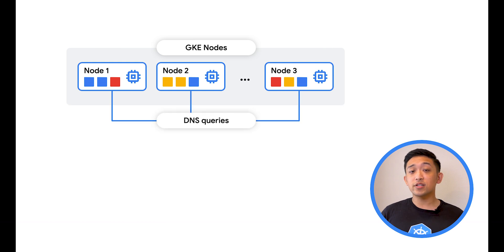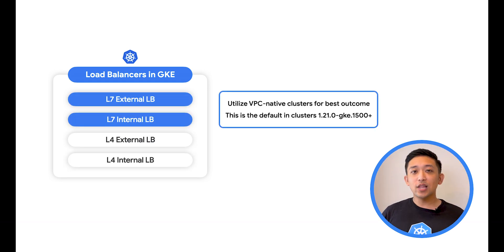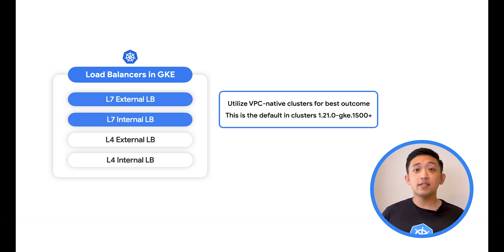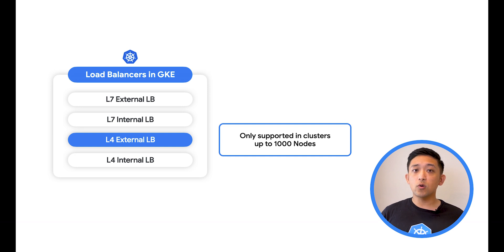GKE also supports a fully managed cluster DNS infrastructure with Cloud DNS for GKE. This removes DNS resolution from the cluster's infrastructure and utilizes a fully managed platform, Cloud DNS, instead. Finally, you'll want to plan for what workloads will need from a load balancing perspective to expose their workloads to clients. For Layer 7 load balancers, both internal and external configurations are best supported at scale when using VPC-native clusters. This makes pod IPs natively routable in your VPC instead of utilizing routing tables, and is the default configuration for all clusters in the 1.21 patch release and newer. For Layer 4 external load balancers, these are only supported in clusters up to 1,000 nodes. This is often the default service type for in-cluster proxies like NGINX, so it's important to know what your tenant's workloads may need here.